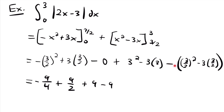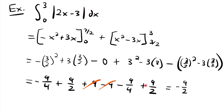So subtracting the three halves term, we distribute the negative: minus nine fourths becomes plus nine fourths, and minus nine halves becomes plus nine halves. The positive 9 and negative 9 cancel. We have two negative nine fourths adding to negative nine halves, and two positive nine halves adding to 18 halves. So negative nine halves plus 18 halves equals positive nine halves. That is the final answer to this definite integral.